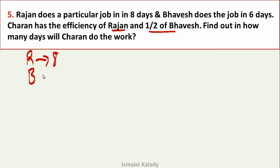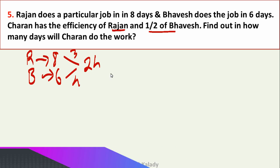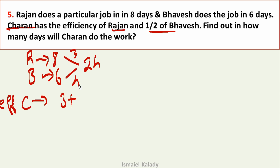Rajan takes 8 days, Bhavesh takes 6 days. Taking LCM of 8 and 6, total work = 24. Rajan's efficiency = 24 ÷ 8 = 3. Bhavesh's efficiency = 24 ÷ 6 = 4. Charan's efficiency = Rajan's efficiency + half of Bhavesh's efficiency = 3 plus (4 ÷ 2) = 3 plus 2 = 5.